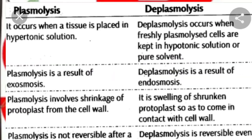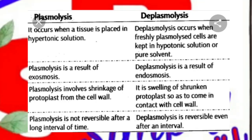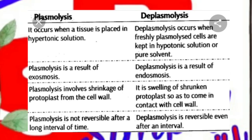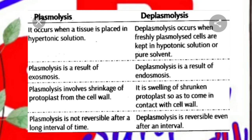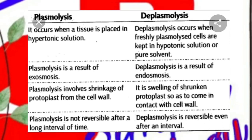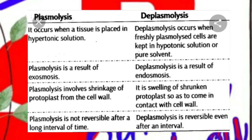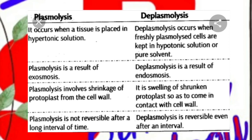Let's see the difference between plasmolysis and deplasmolysis. Plasmolysis occurs when tissue is placed in a hypertonic solution; deplasmolysis occurs in a hypotonic solution. Plasmolysis is a result of exosmosis; deplasmolysis is the result of endosmosis.